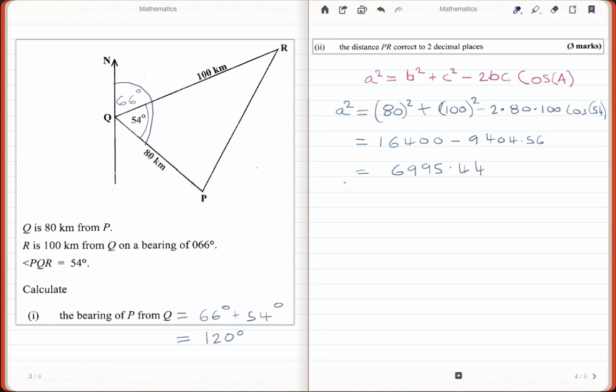And all of this is A squared. So to find A, I would find the square root of that, which should give me 83.64 kilometers. That means my answer for here should be 83.64 kilometers. So that's part 2 completed.